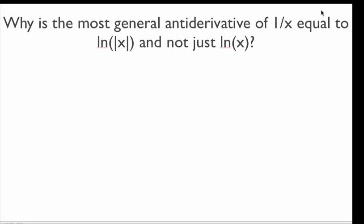Hello and welcome to this quick screencast where we're going to deal with one question: why is the most general antiderivative of 1 over x equal to natural log absolute value of x, and not just natural log of x? I'm not going to be writing the plus c on the end of any of these antiderivatives. We all know that if I find one antiderivative, the most general antiderivative would be that function plus an undetermined constant.